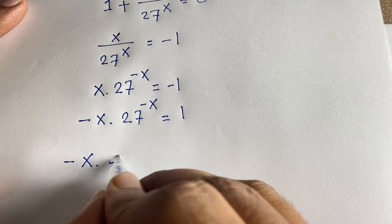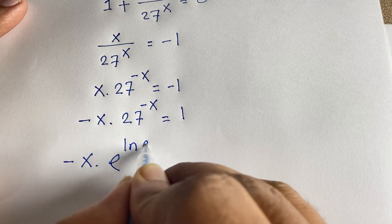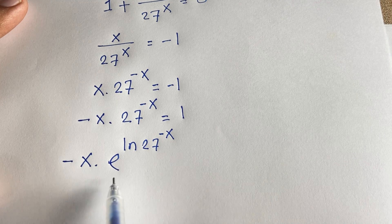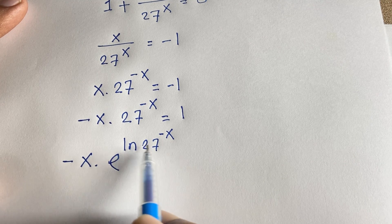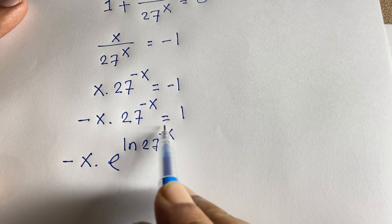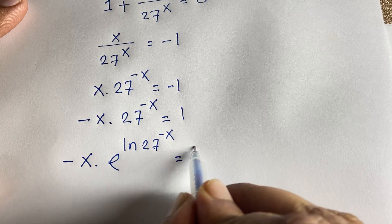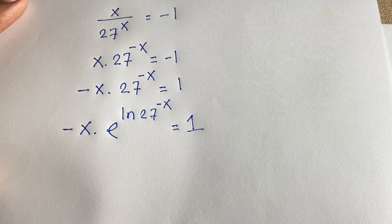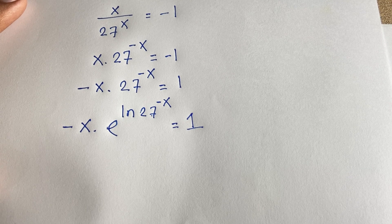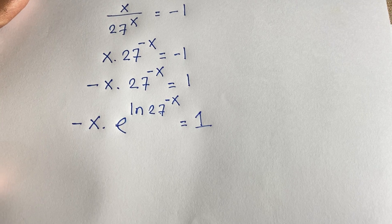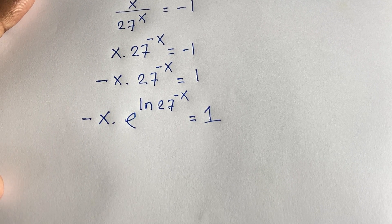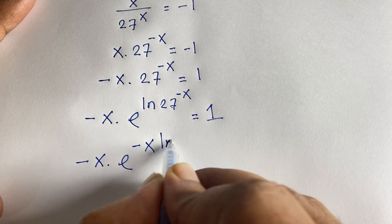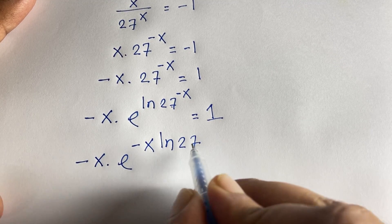I rewrite 27^(-x) as e^(ln27 · (-x)), using the identity e^(ln a) = a. So the equation becomes -x · e^(-x · ln27) = 1. Now I multiply both sides by ln27 to prepare for the Lambert W function.